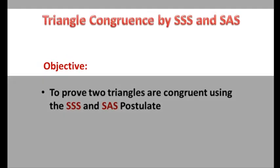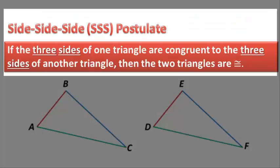We're going to start with the side-side-side postulate, which we can abbreviate as SSS. The side-side-side postulate specifically says: if the three sides of one triangle are congruent to the three sides of another triangle, then the two triangles are congruent.